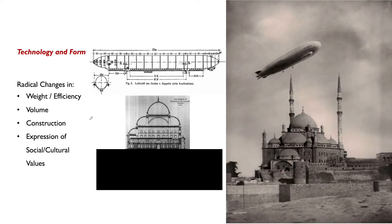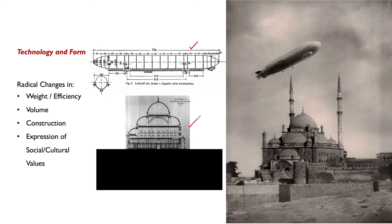One favorite image on the right says so much about a particular era of technology and form — the mosque of Muhammad Ali in Cairo with a zeppelin flying over it. Fascinatingly, these were constructed within a decade of each other. I've generated a comparative section. When you think about all the differences between these two structures — radical changes in thinking about weight, efficiency, and overall volume — how they're constructed, and what it means to construct with something light enough literally to fly versus something very heavy built to maximize interior volume through domes.